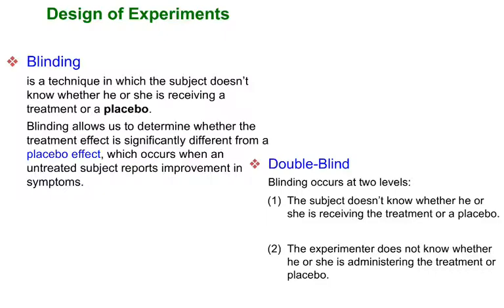A double blind is where neither the person giving the treatment nor the person receiving it knows which treatment is being administered. Someone at an administrative level does know. This matters because, for example, if a side effect is excessive vomiting and a patient complains to the doctor, and the doctor knows the patient is on a placebo, they might dismiss it. We want everyone to be treated the same — if anyone reports any type of symptom, we want to make sure they're taken out of the study equally.